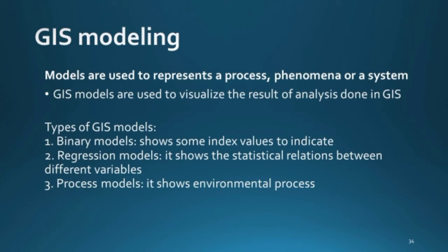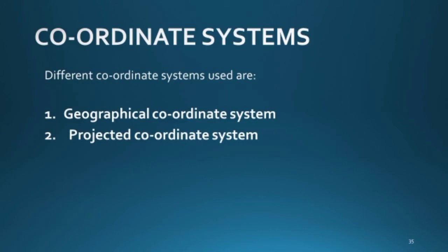There are three types of GIS models: binary models, which show index values to indicate something; regression models, which show statistical relations between different variables; and process models, which show environmental processes. For modeling particular data there are two systems of coordinates: geographical and projected coordinate systems. The projected coordinate system is like our four-quadrant coordinate system, while the geographical system is more about our globe, considering earth as a sphere.